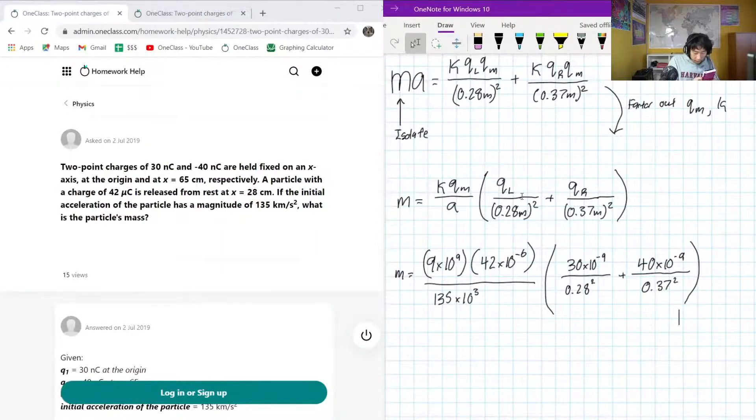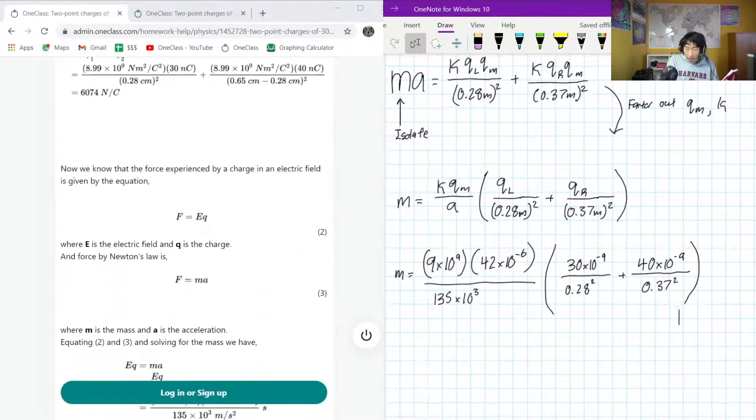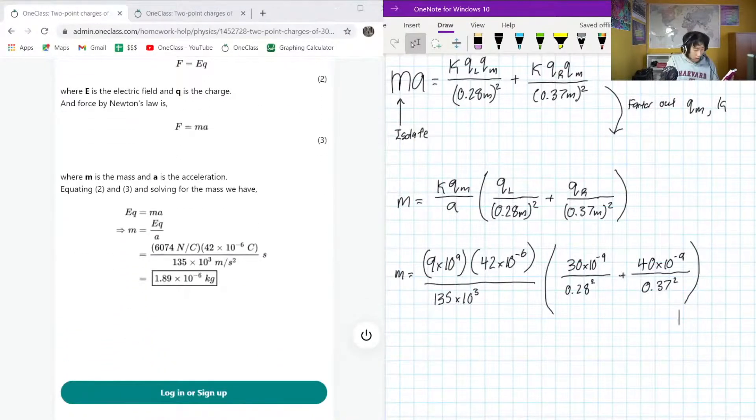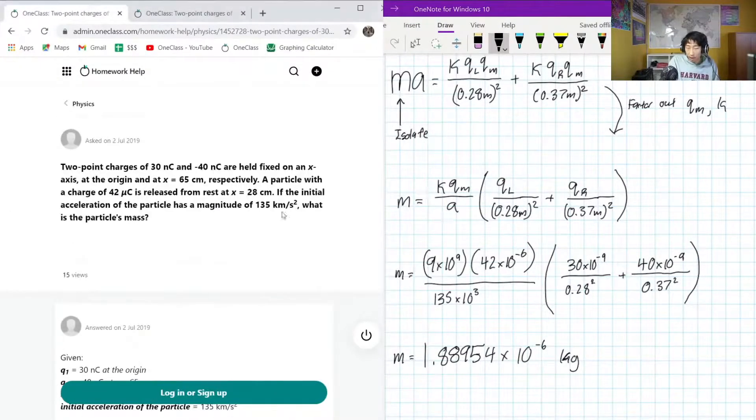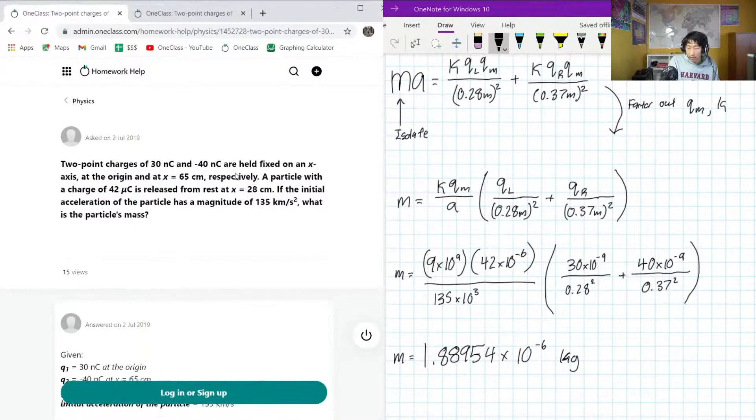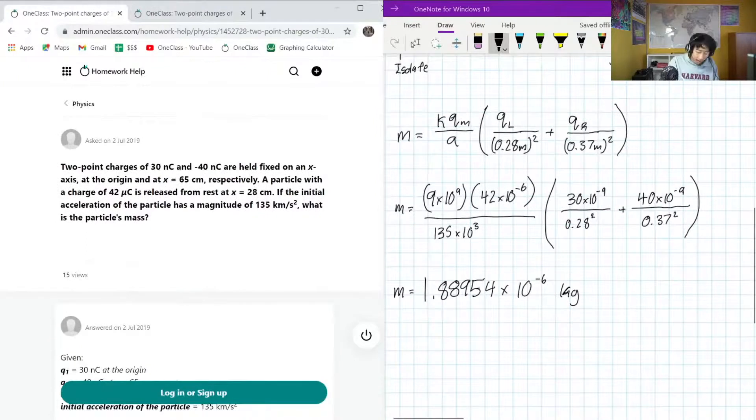And my result for this calculation is in the microgram scale. Yeah, exactly. So, my mass here is calculated to be pretty much the same value. So, I got 1.8894954 times 10 to the negative 6 kilograms. And from our original question, these have 1 significant figure. So, our final answer is going to need to be 1 significant figure.